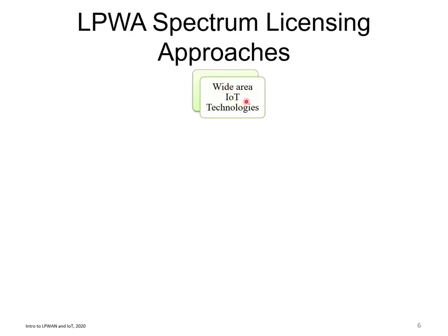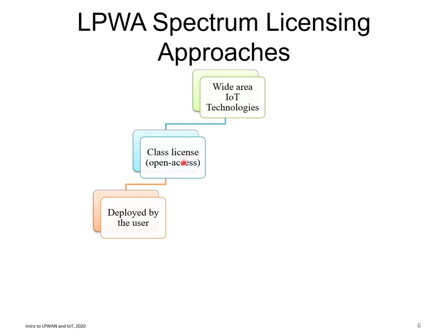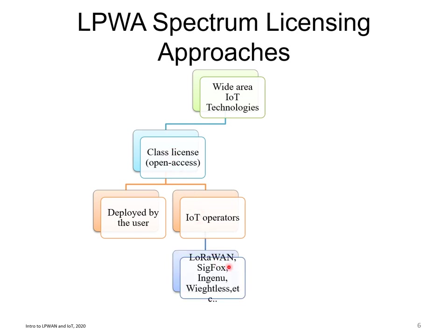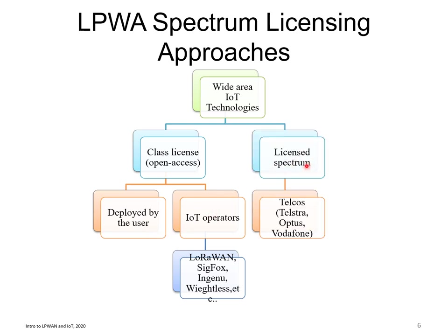Broadly speaking, IoT wide area technologies — or LPWAN — can be divided into licensed and unlicensed spectrum. In Australia, 'class license' is the term used by the Australian Communication Media Authority to refer to free-access spectrum that can be used without paying fees. Under this type of spectrum, networks can be deployed by users or IoT operators. Technologies such as LoRaWAN and Sigfox operate in this free spectrum. For licensed spectrum, telcos such as Telstra, Optus, and Vodafone in Australia are mainly deploying NB-IoT technology, which will also be carried under the 5G standard.